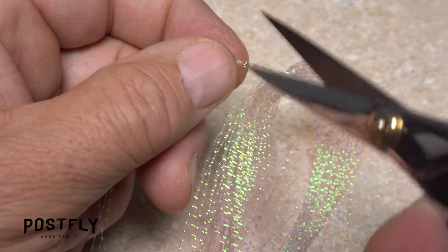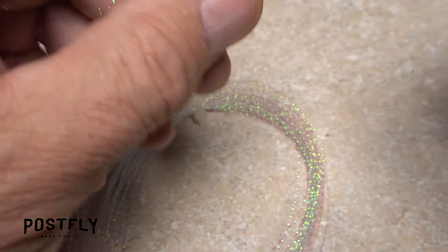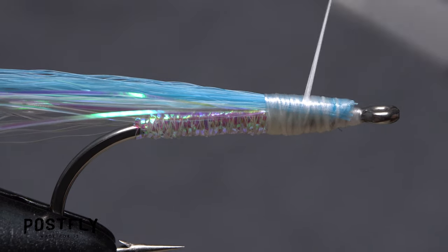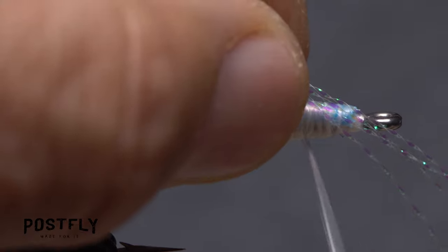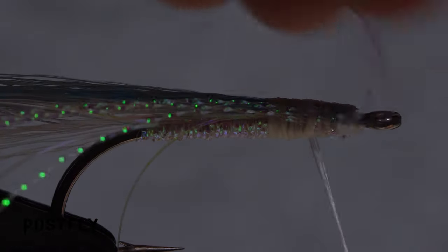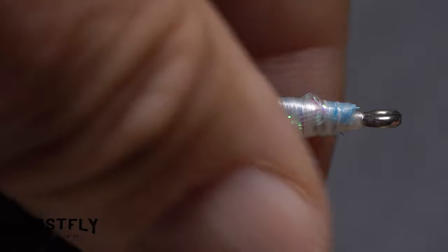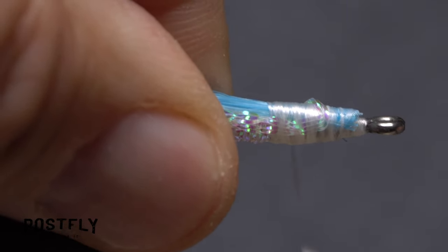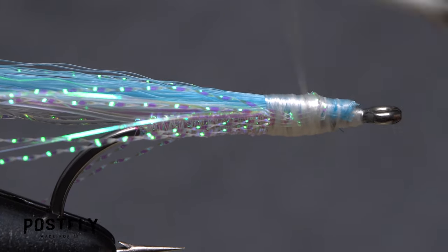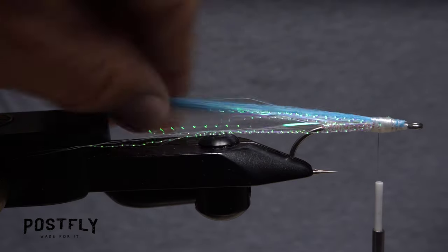Crystal Flash adds another layer of shimmer and attraction to the pattern. Snip just four or five strands free from the hank and find their midpoint. Secure one side of the flash to the near side of the hook with wraps of tying thread, then pull the forward pointing portion over to the far side of the hook and secure it there. The idea is to have Crystal Flash running down either side of the fly. Take a few more wraps of tying thread to smooth everything out. The Crystal Flash should end up being about as long as the Flashaboo.